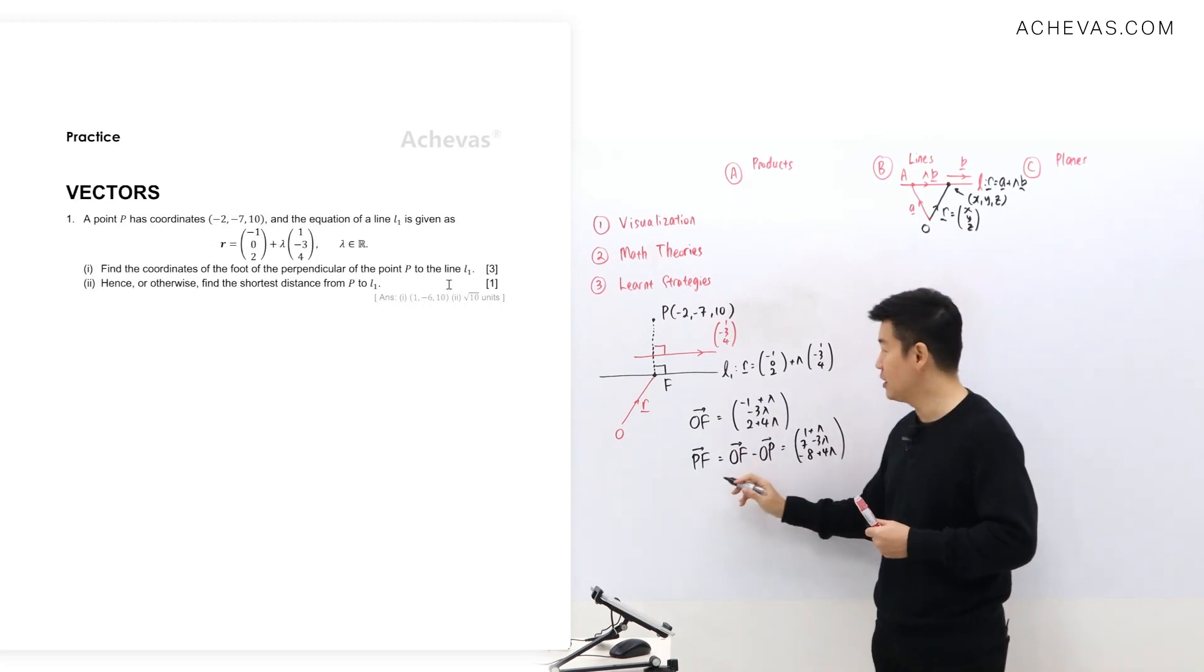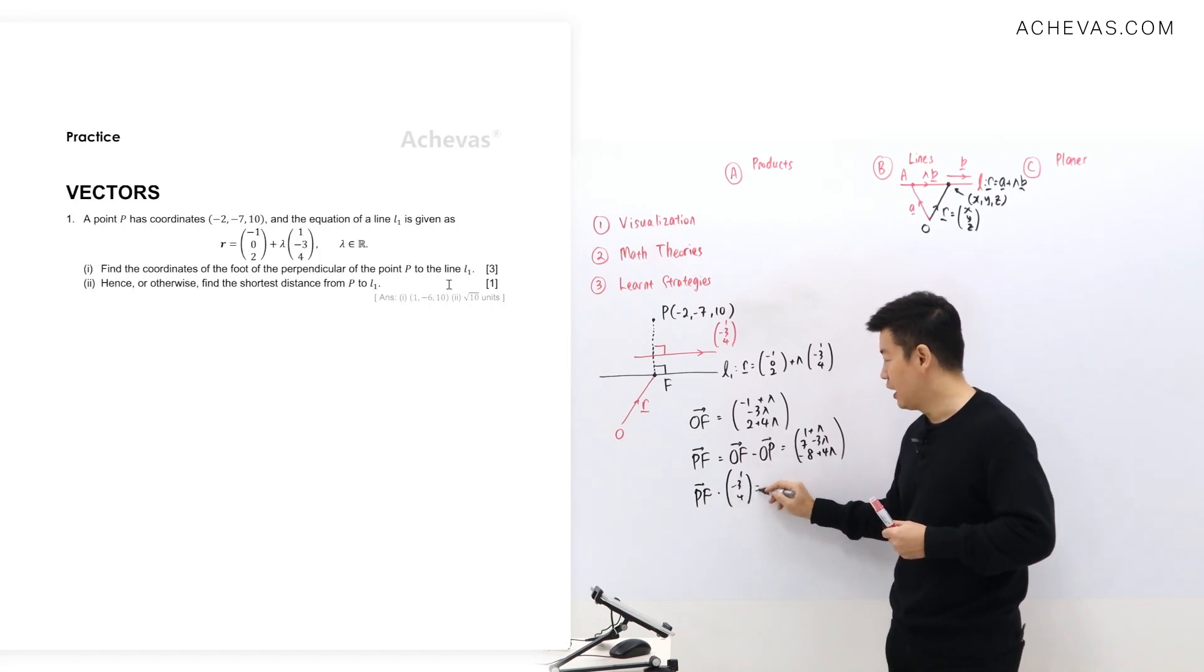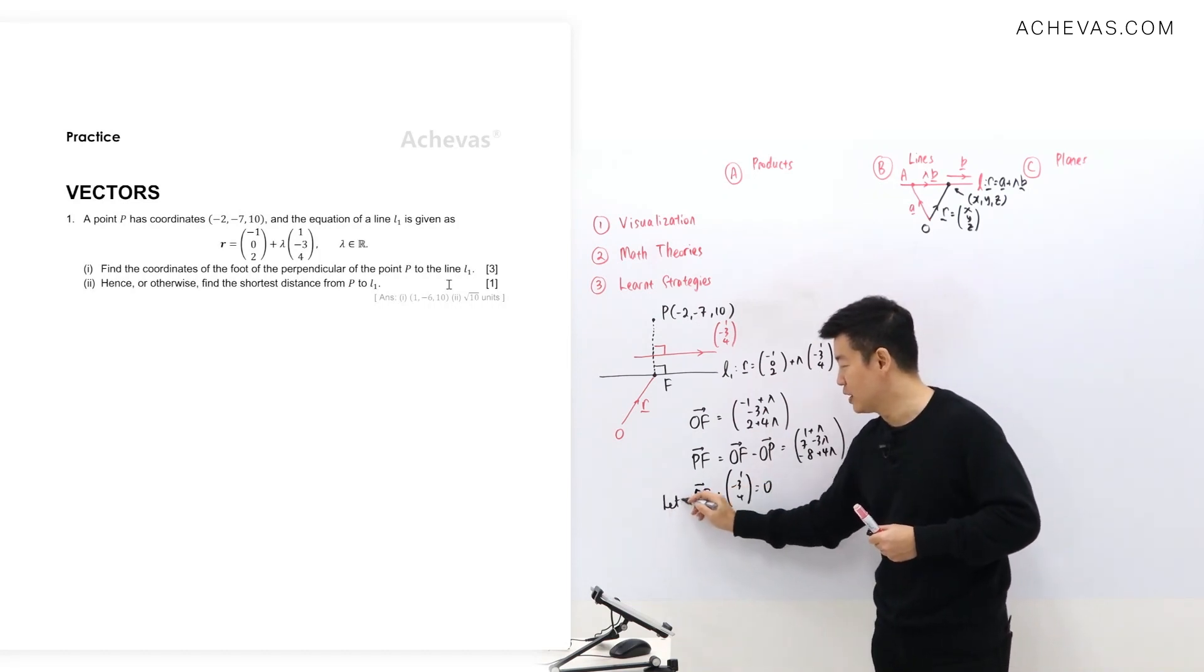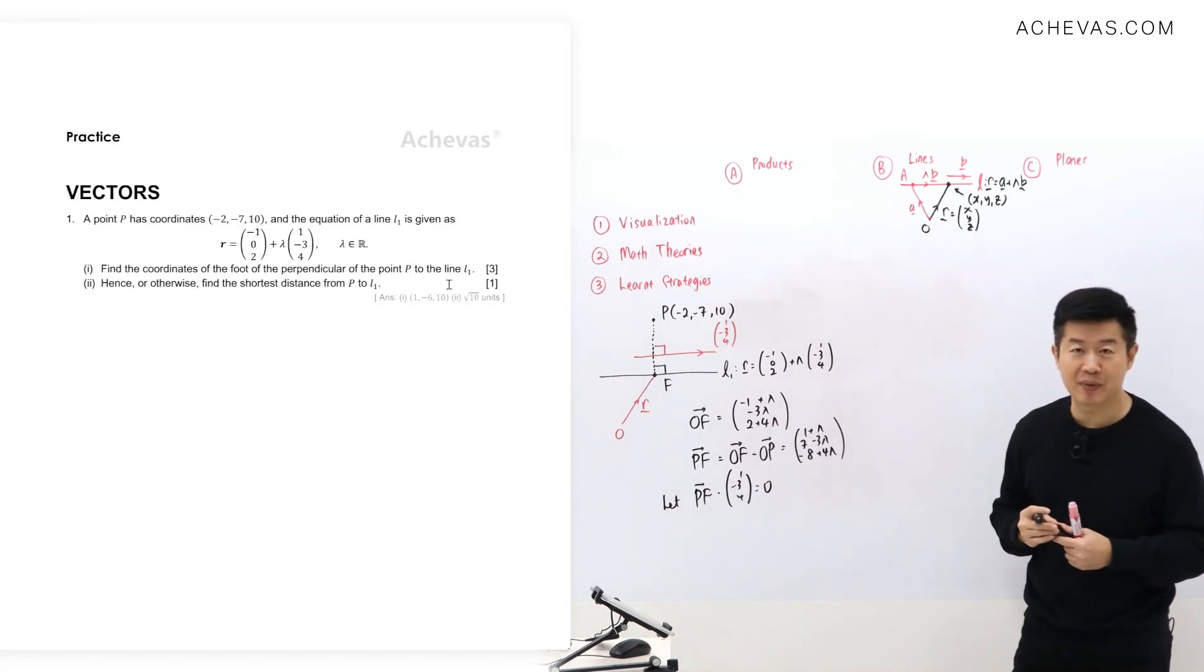So PF is also going to be perpendicular to this. That is why from here, I'm going to let PF dot this 1, negative 3, 4, I'm going to let this be equal to 0, because PF is perpendicular to the line L1. Any question?